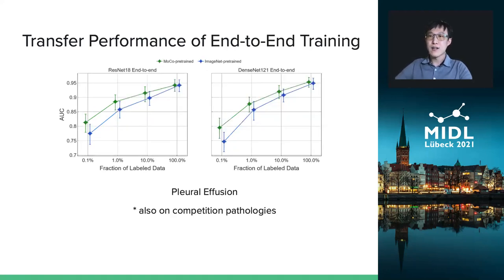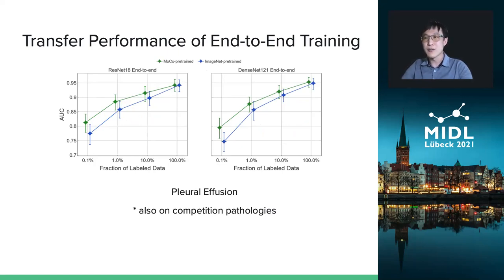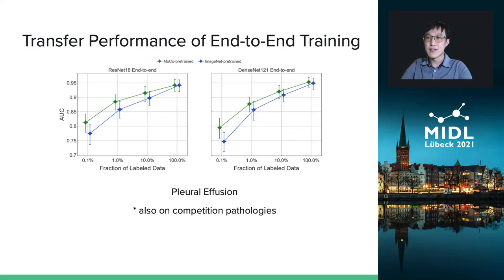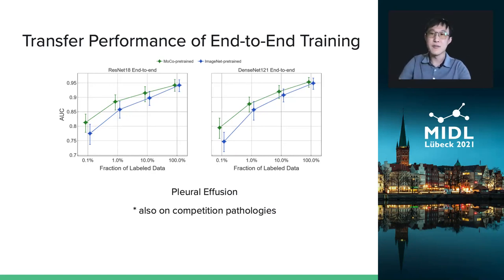In the end-to-end training setup, we unfreeze the models — that is, all the model weights are allowed to be trained. With this setup, we are still able to observe performance gains for the MOCO pre-trained models. For both the end-to-end training setup and the previously mentioned linear classifier setup, the most performance gain is observed at low-label fractions. This is consistent with previous works in self-supervised learning, and these results demonstrate that our MOCO pre-training method can be very useful when a limited number of training samples are available.